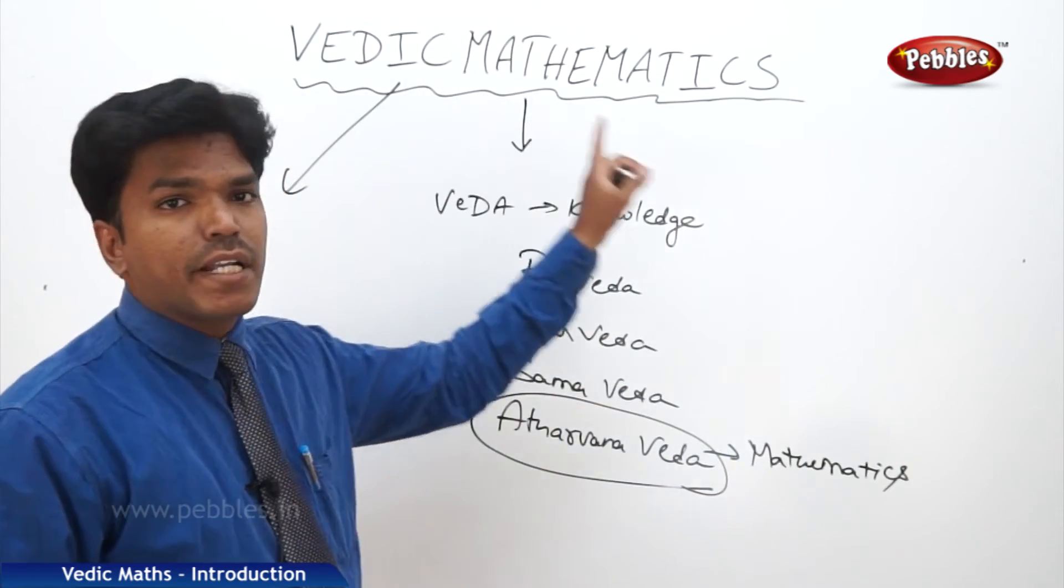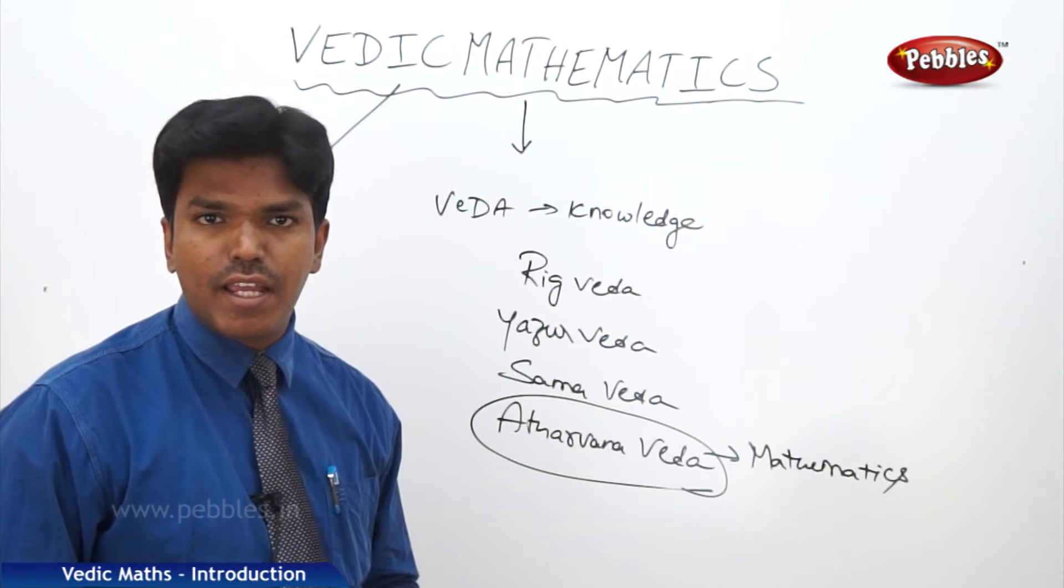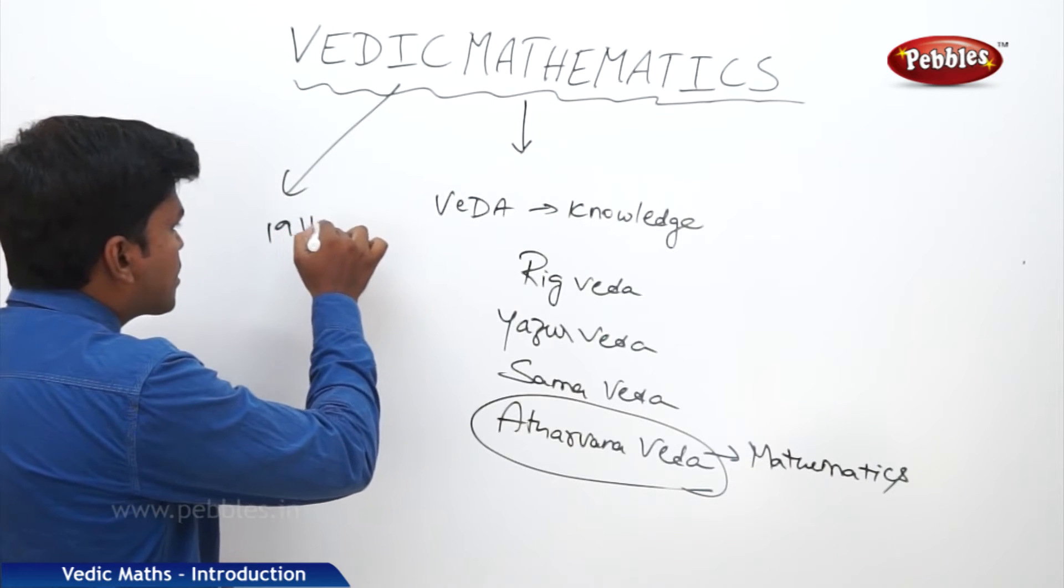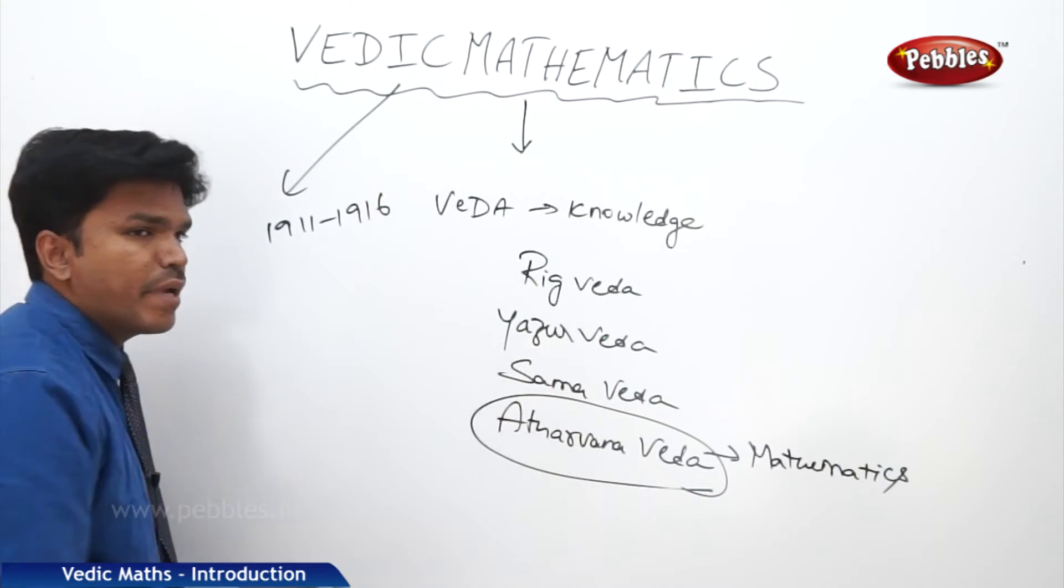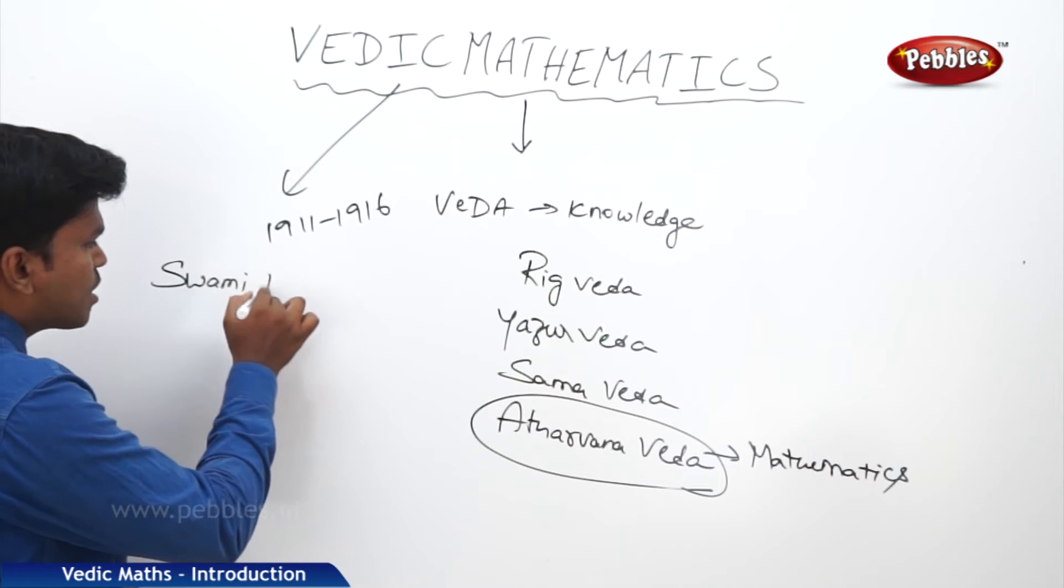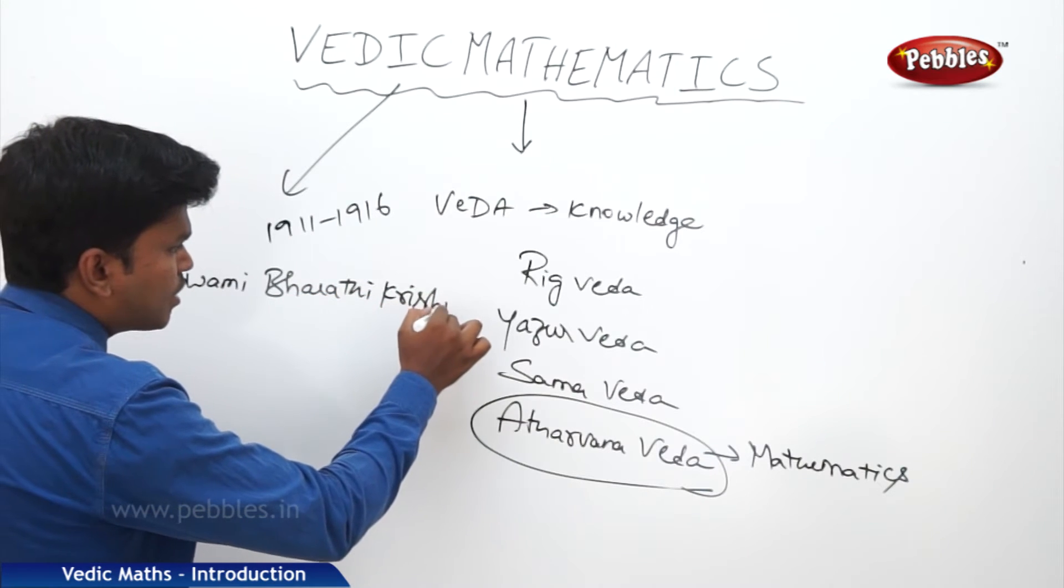The term Vedic Mathematics came into existence in the starting of 20th century, and this term is given by a great personality between 1911 to 1916, and his name is Swami Bharati Krishna Tirtha Ji.